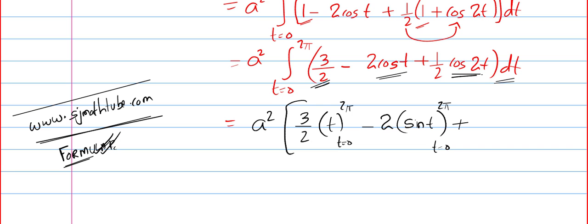And the integral of cos is sine 2t by 2. So, we get 1/4 sine 2t, t equal to 0 to 2π. Now, plug in the values and that gives you 3π a² minus 0. So, we get 2π and sine 2π is 0. So, the answer is 3π a².